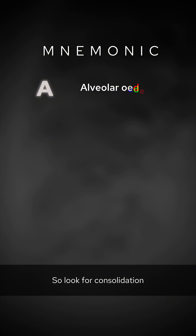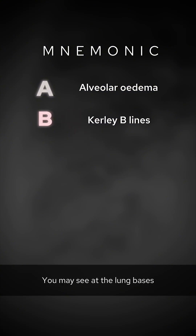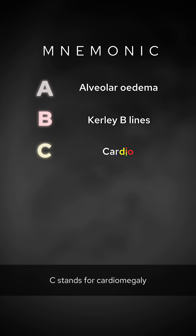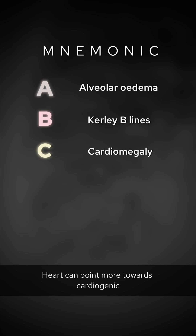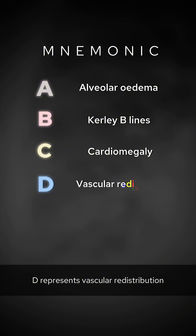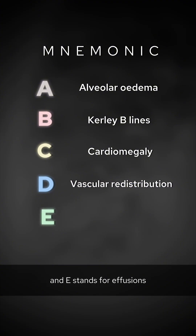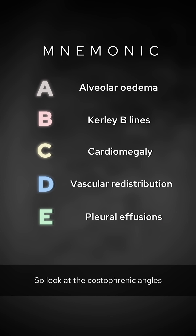Some of the key signs of pulmonary edema can be summed up with the handy ABCDE mnemonic. A is for alveolar edema — look for consolidation, which is usually bilateral. B stands for curly B-lines, which you may see at the lung bases. C stands for cardiomegaly — on a PA film, an enlarged heart points more towards cardiogenic rather than non-cardiogenic pulmonary edema. D represents vascular redistribution, so look for prominent upper lobe pulmonary veins. E stands for effusions, which are usually bilateral — look at the costophrenic angles.